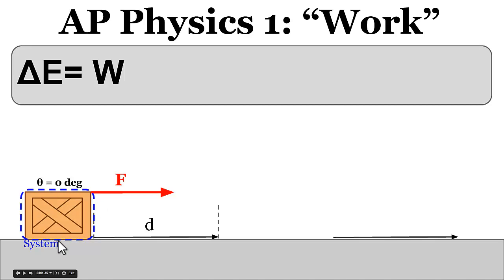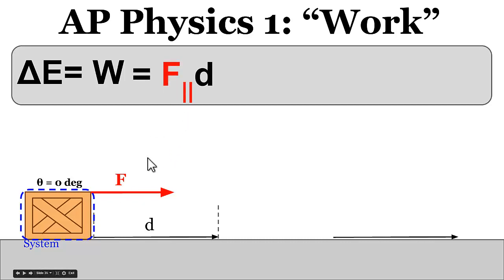Looking at a box resting on level ground, whether there's friction between the ground and the box or not, if you apply a force over some displacement, energy is going to be transferred into or out of that system. If the force is constant and you have some displacement D, you can simply calculate the work done as the force multiplied by the displacement.